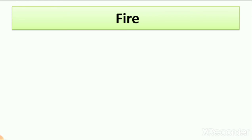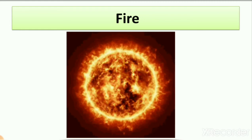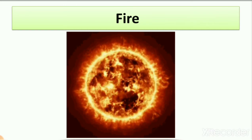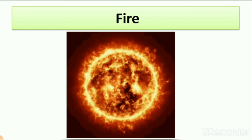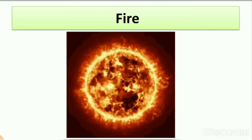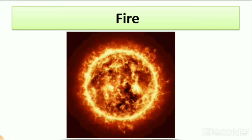Number two is 'fire.' The spelling is F-I-R-E. In this lesson we learn that the sun is a big yellow ball of fire. Here you can see the picture of fire — I put a ball of fire here so you can easily understand that the sun is a big yellow ball of fire.